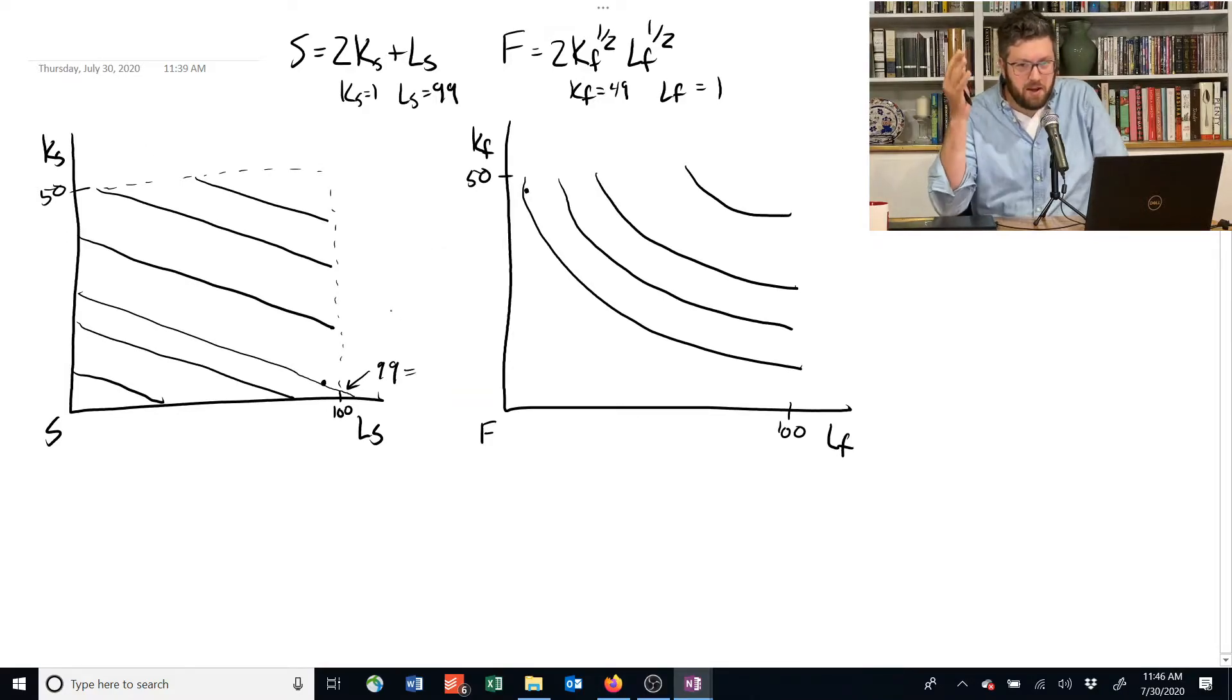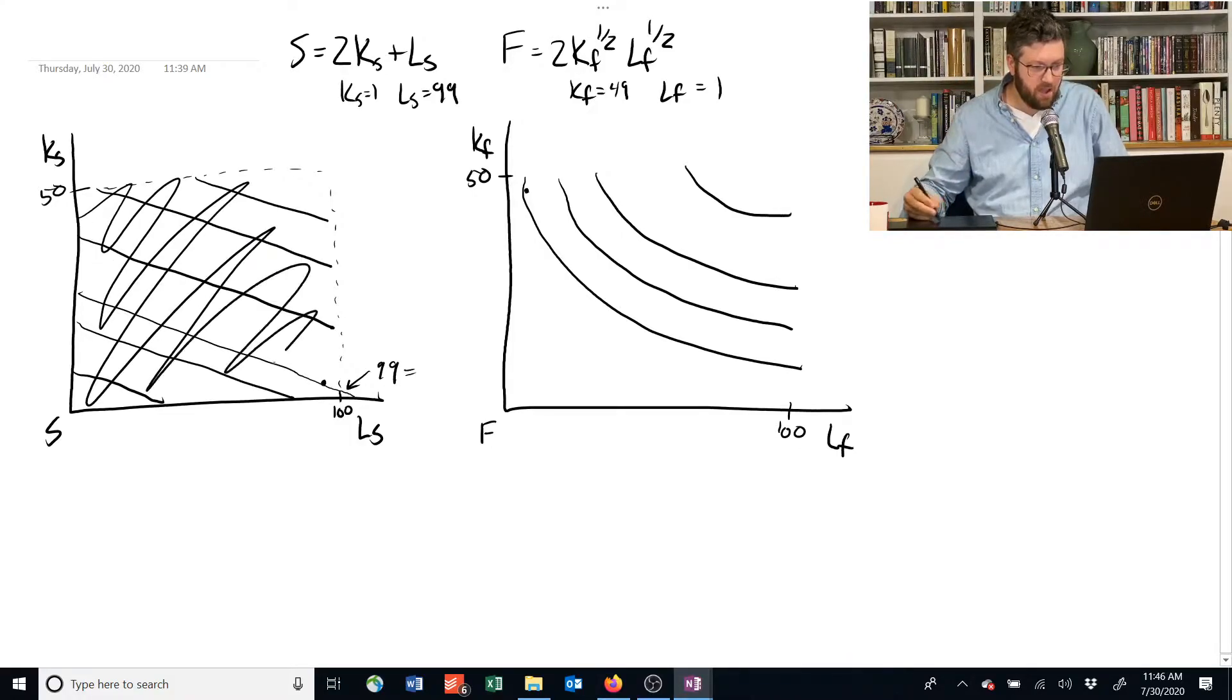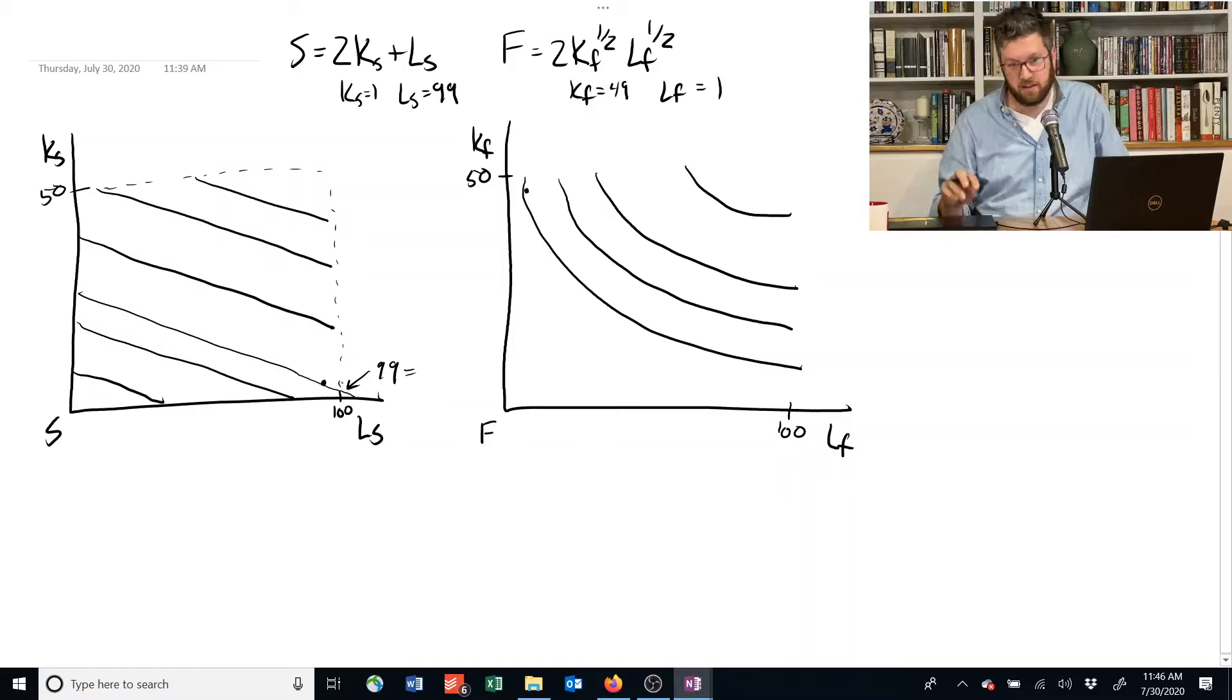On the other hand, anywhere within this shaded box, anywhere in there is at least technically feasible for this economy to achieve. They have enough capital, they have enough labor that if they wanted to make the food associated with that bundle, they could do it. Similarly over here, any amount of capital above 50 is not available and any amount of labor above 100 is just not available.